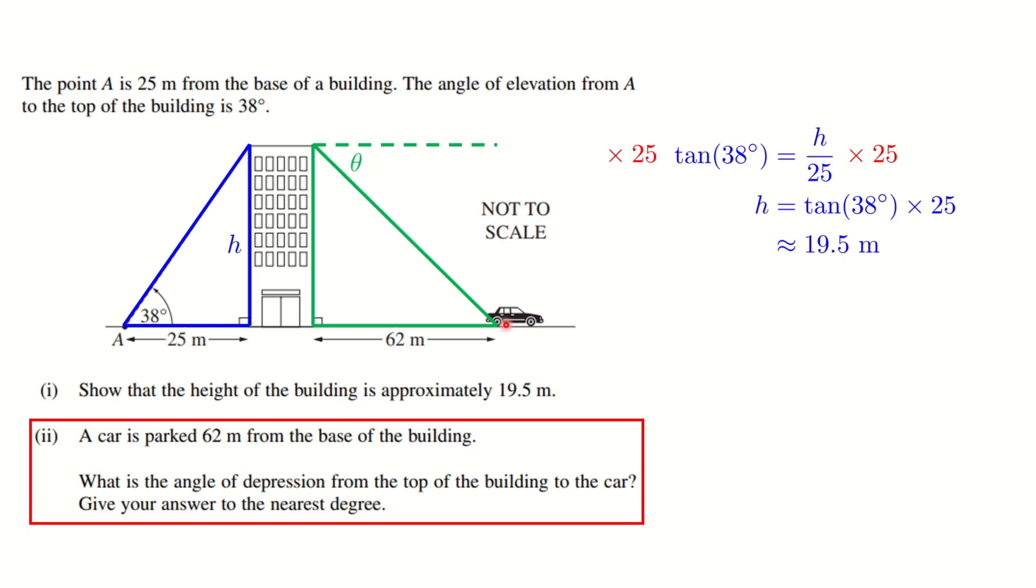So how do we get this angle? Well, we need to be able to bring this angle somehow into the right angle triangle, and the best way to do this is to recognize that the horizontal up here is parallel to the horizontal down there.